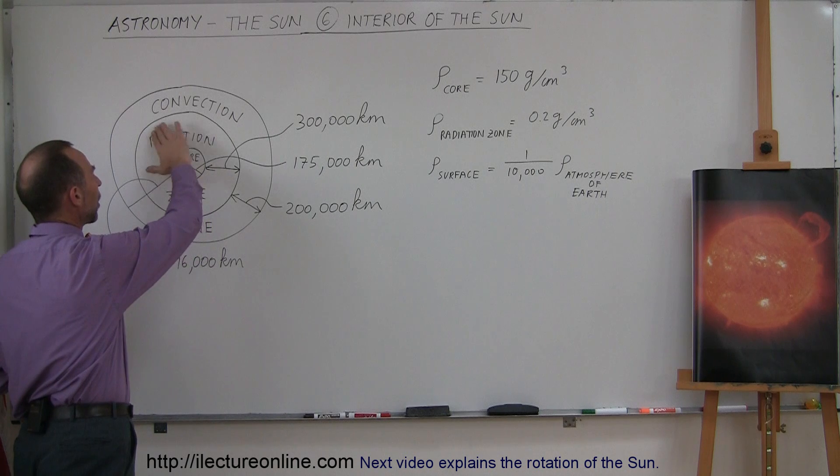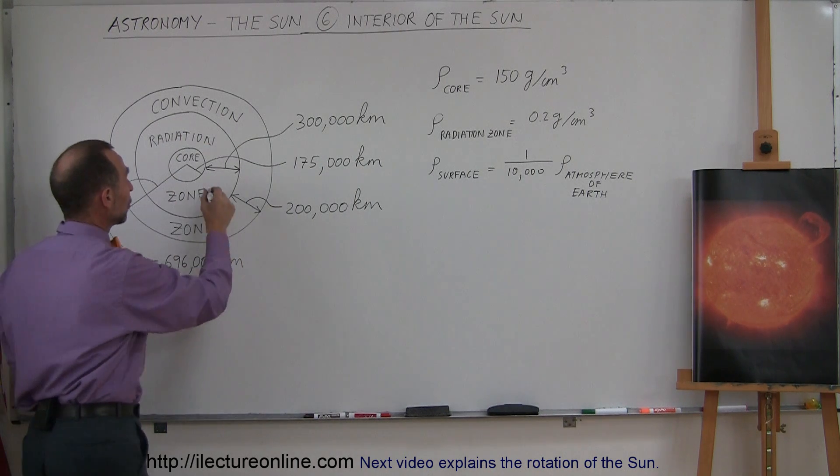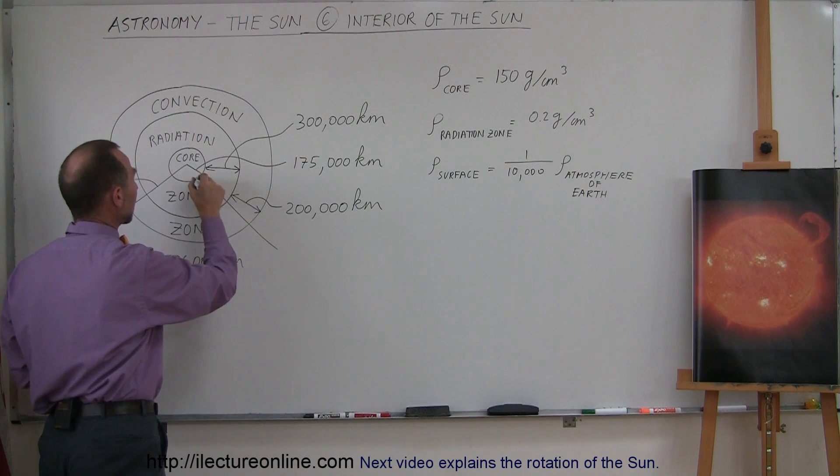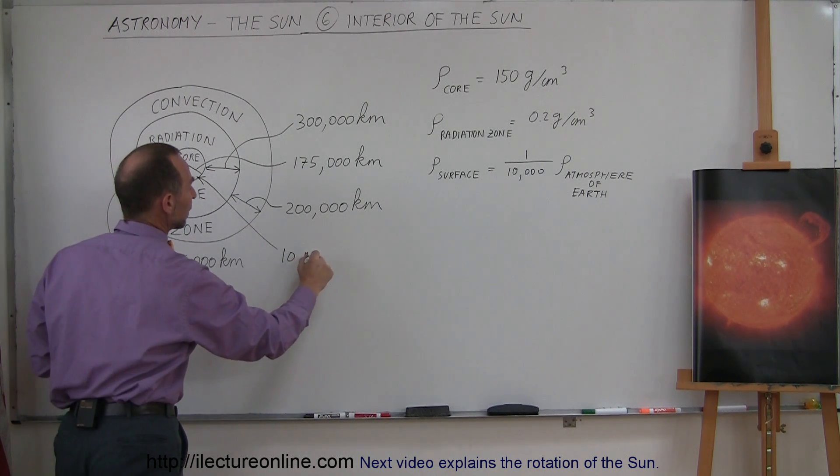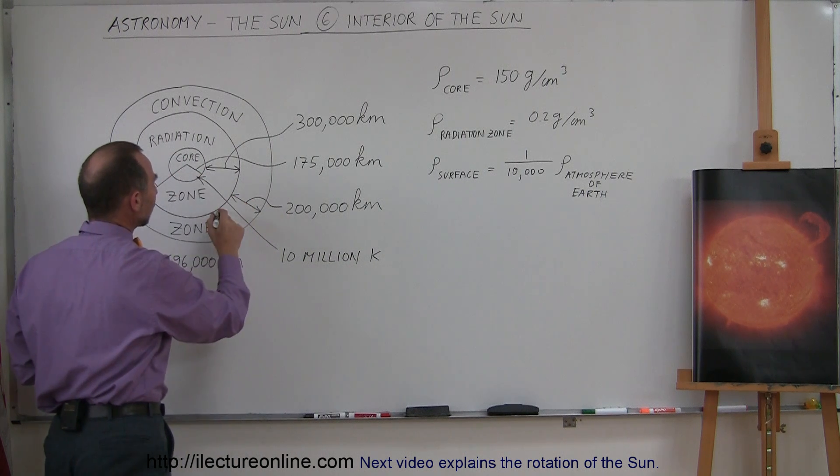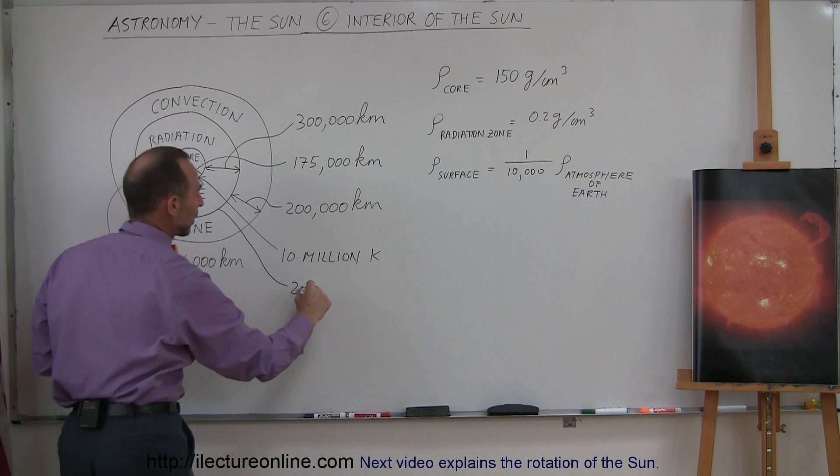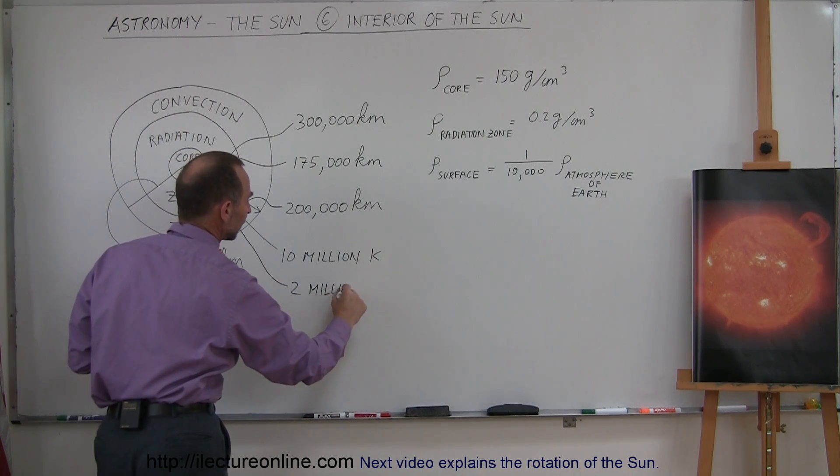So, beyond the core, there's what we call the radiation zone. This is a place where the temperature is still really hot. So, you can imagine at this point right here, the temperature is about 10 million Kelvin. And then the temperature slowly declines until it reaches the end of the radiation zone, where the temperature is about 2 million degrees Kelvin.